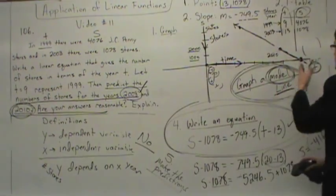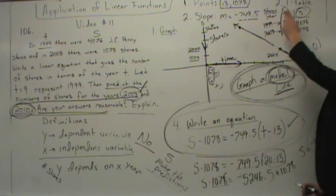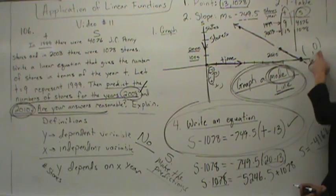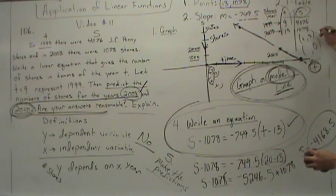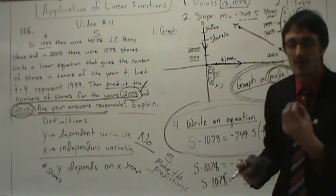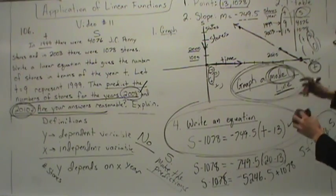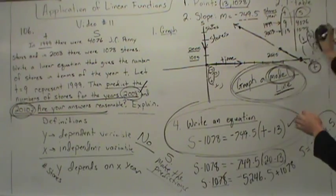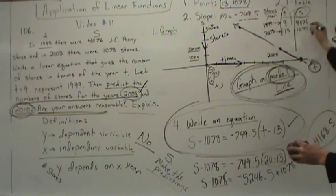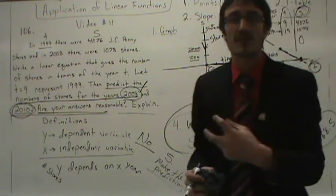Notice: X is T and Y is S. So we're saying the y-value is zero — meaning when S is zero, or when the number of stores reach zero. What do we still need to know? We still need to know the time — when does this occur? In our T table, we're interested in finding when the number of stores reach zero.